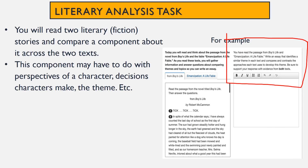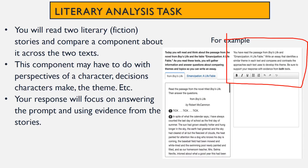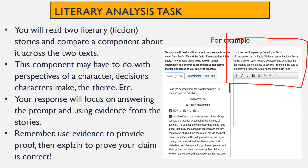For example, you have read the passage from Boy's Life and Emancipation: A Life Fable. Write an essay that identifies a similar theme in each text and compares and contrasts the approaches each text uses to develop this theme. Be sure to support your response with evidence from both texts. From this, you can see you're focusing on theme, which is a literary and fiction component.